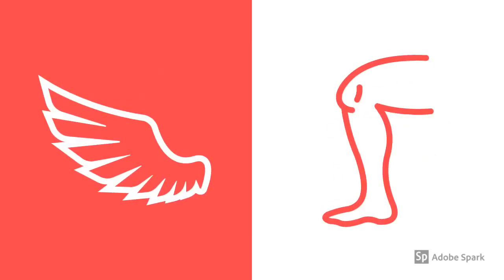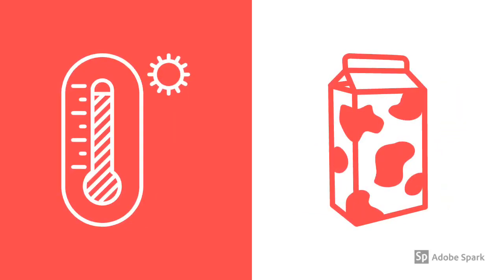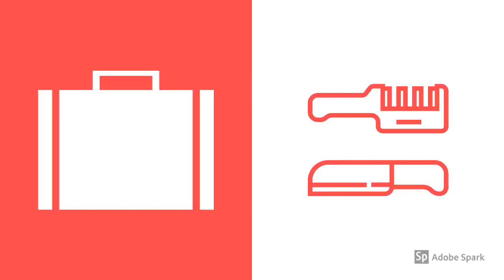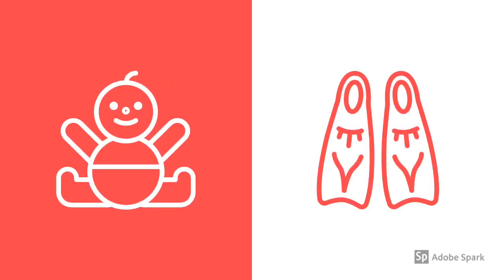What's the connection between wing and leg? Here's a hint — it's delicious. What's the connection between man and web? Your hint is eight legs. What's the connection between hot and milk? Here's a hint — it's a bean. What's the connection between case and sharpener? Your hint is number two. What's the connection between house and angry? Your hint is Twitter. What's the connection between baby and fin? The hint is twin.